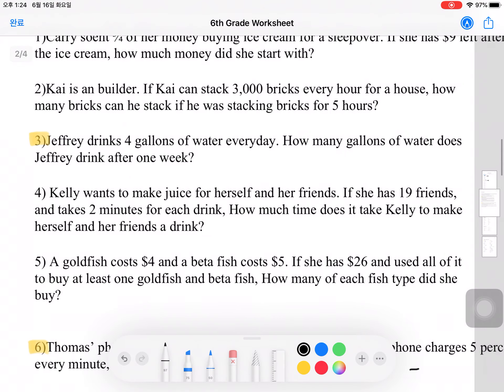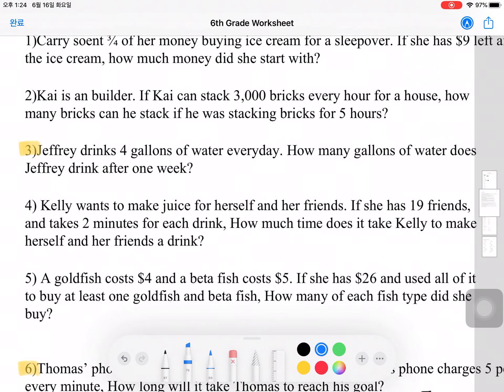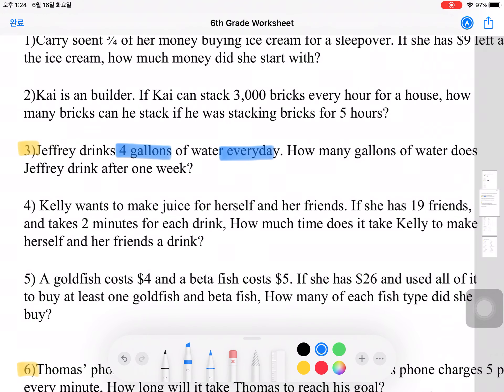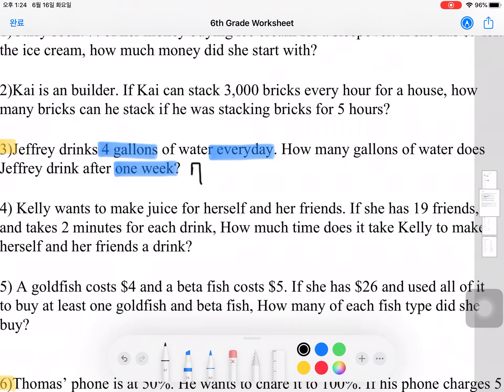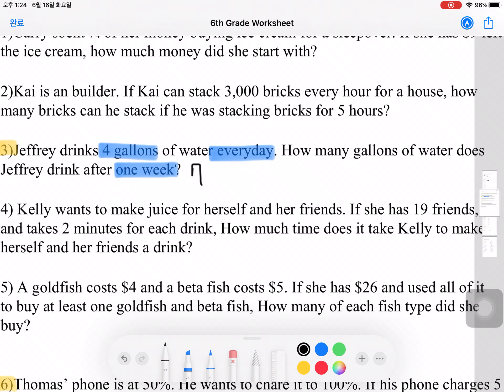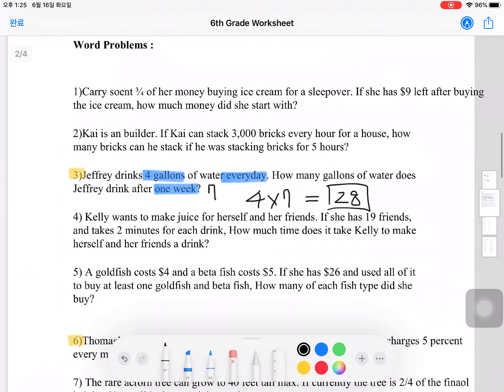For number 3, Jeffrey drinks 4 gallons of water every day. How many gallons of water does Jeffrey drink after 1 week? For this question, here are some key terms: 4 gallons every day and after 1 week. First we need to figure out how many days are in 1 week, which is 7. So it's asking, how many gallons does Jeffrey drink in 7 days? Since there's 4 gallons every day and 7 days, this is a multiplication problem of 4 times 7, which is 28.